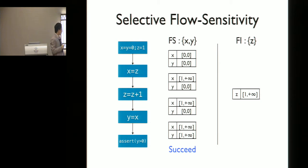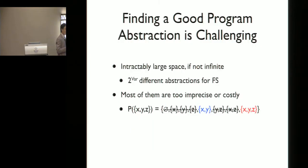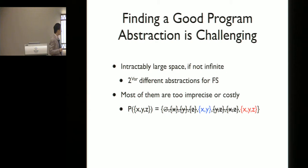Our goal in this paper is to find such a small yet effective set of program variables before running the static analysis. But as we have seen, this problem of finding a good program abstraction is extremely challenging. The abstraction space in static analysis is typically very large, if not infinite — in flow-sensitivity we have exponentially many different subsets of program variables. Most abstractions are too imprecise or too costly.